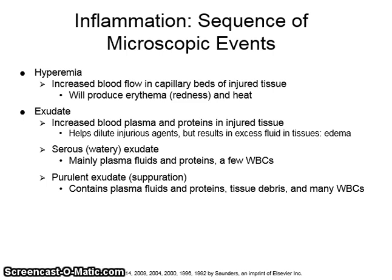Purulent exudate, or suppuration, contains plasma fluids, proteins, tissue debris, and many white blood cells. An abscess is a collection of purulent exudate that has accumulated in a cavity formed by the tissue.